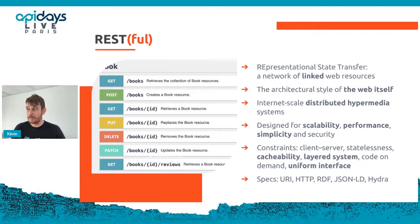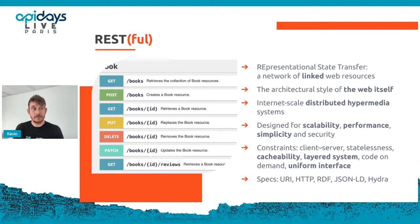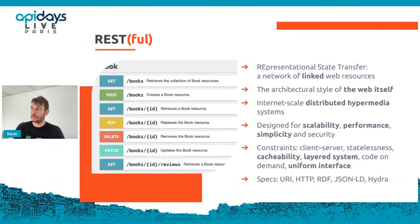REST has been designed to build the web itself. It's not an architectural style specific to APIs — it was designed at the same time as the HTTP 1.1 specification and is also the architectural style of the web. When you are browsing a web page and clicking on a link in your web browser, you are using a REST application. From the ground up, REST has been designed as a pattern to create distributed hypermedia systems — a system of a graph of resources that you can browse using links.